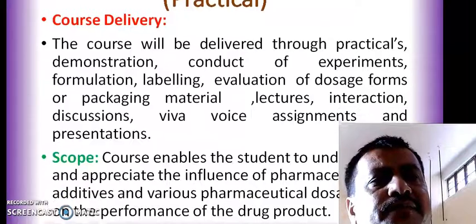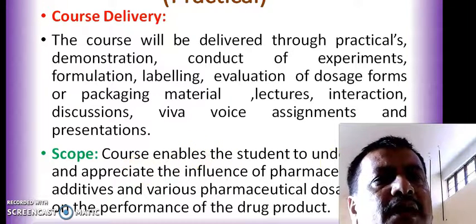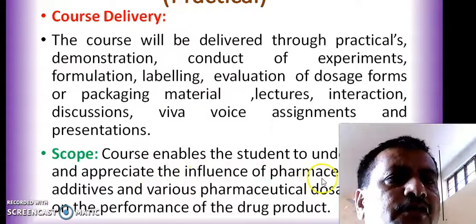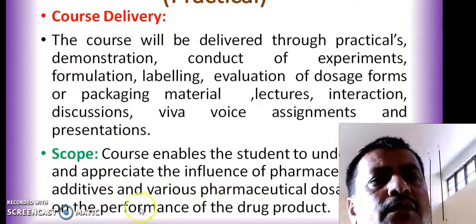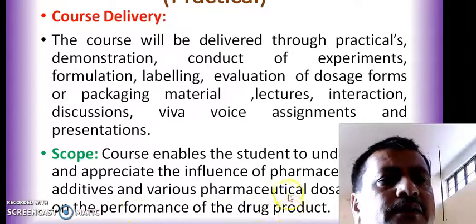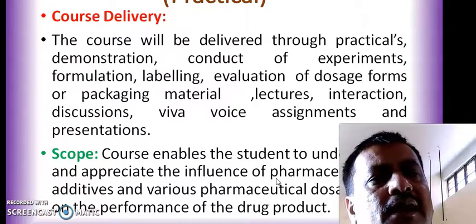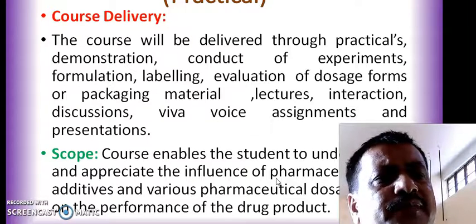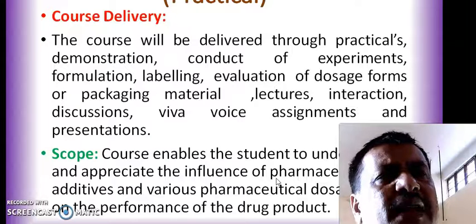After completion of BP506P Industrial Pharmacy 1 practical course, students will be able to understand and appreciate the influence of pharmaceutical additives on the various pharmaceutical dosage forms. In short, you will be in a position to know which excipients go into dosage forms such as tablets, capsules, liquid orals, ophthalmic products, parenteral products, and how to carry out quality control tests for packaging materials.